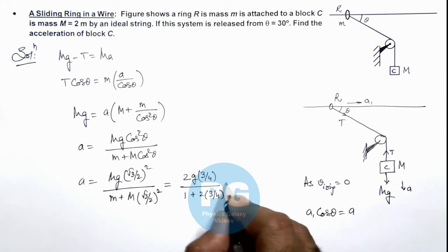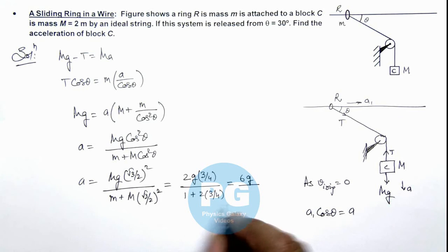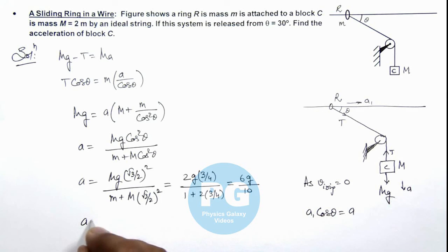If we simplify this value, the result we are getting here is 3g by 5. This is 6g divided by... this will be 4 plus 6, this is 10. So the final result of acceleration we are getting is 3g by 5, that is the final result of this problem.